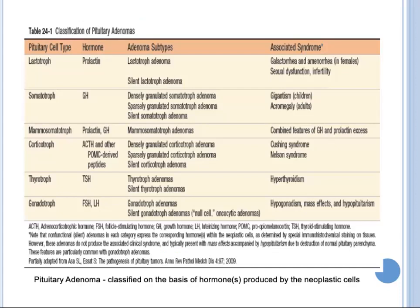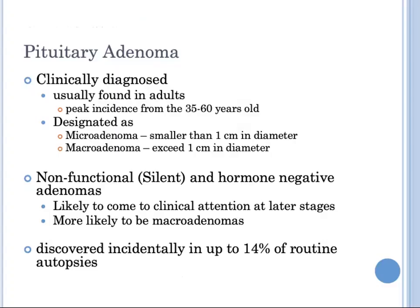Pituitary adenomas are classified on the basis of the hormones expressed by tumor cells. Note that some pituitary adenomas secrete two hormones, and the most common combination is growth hormone and prolactin. Pituitary adenomas are usually found in adults, with peak incidence from 35 to 60 years of age. They are designated as microadenomas if less than 1 cm in diameter, and macroadenomas if they exceed 1 cm in diameter.